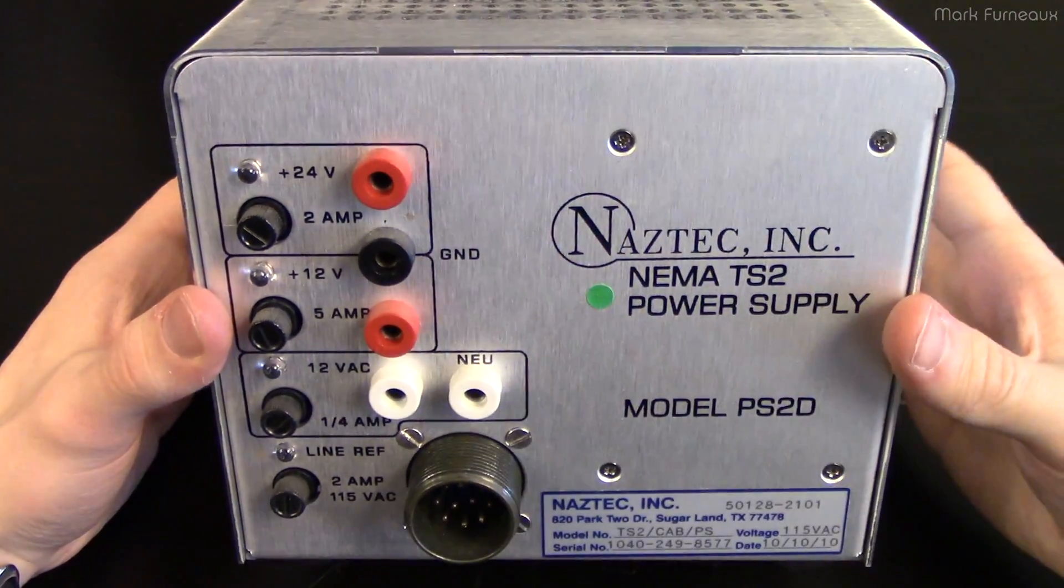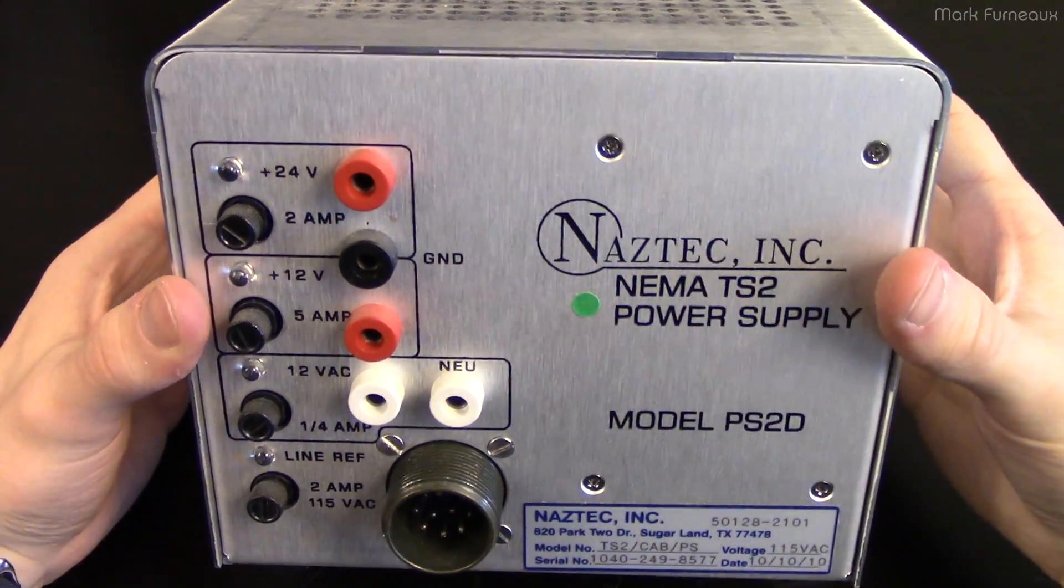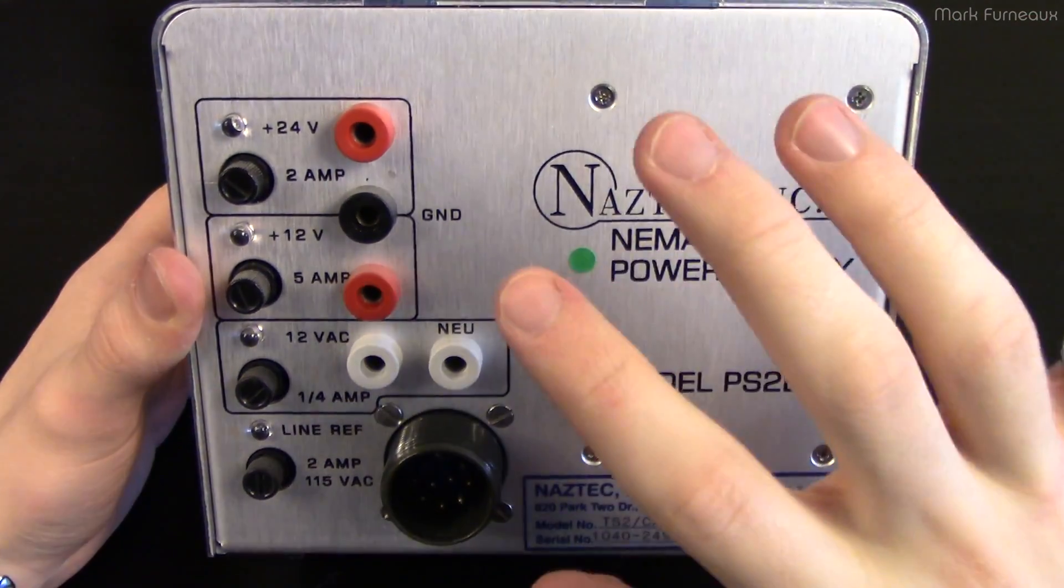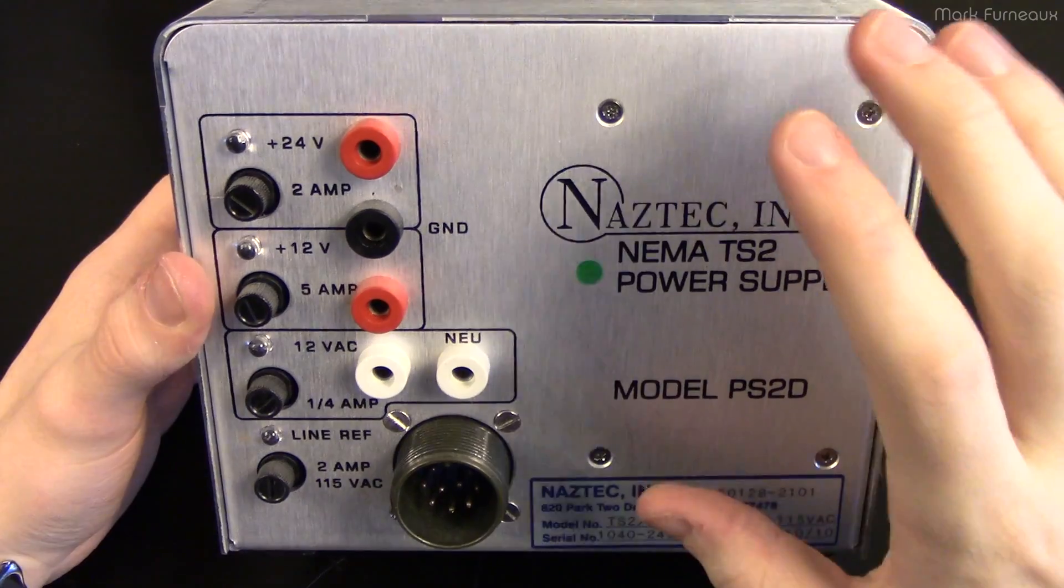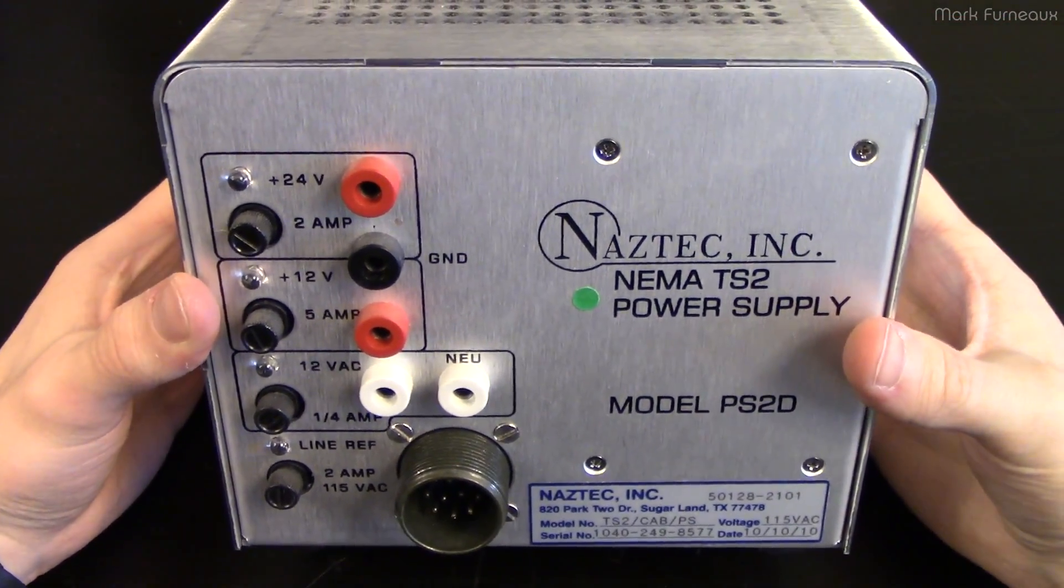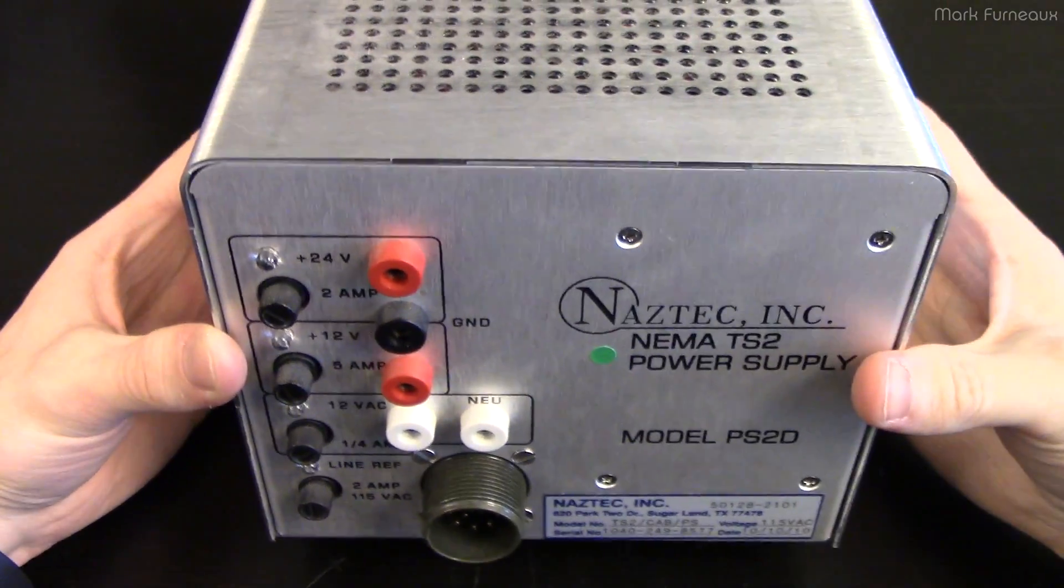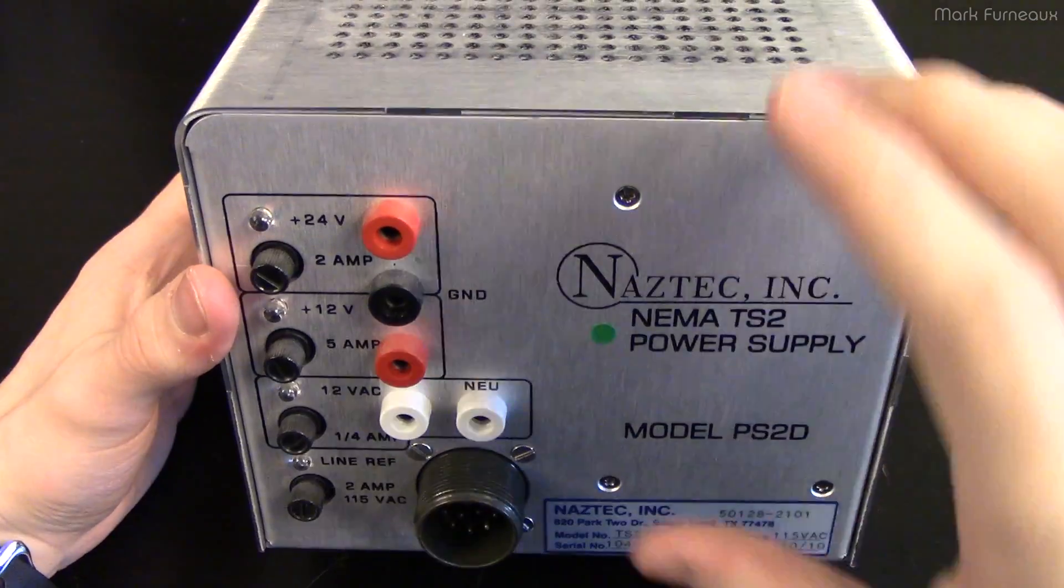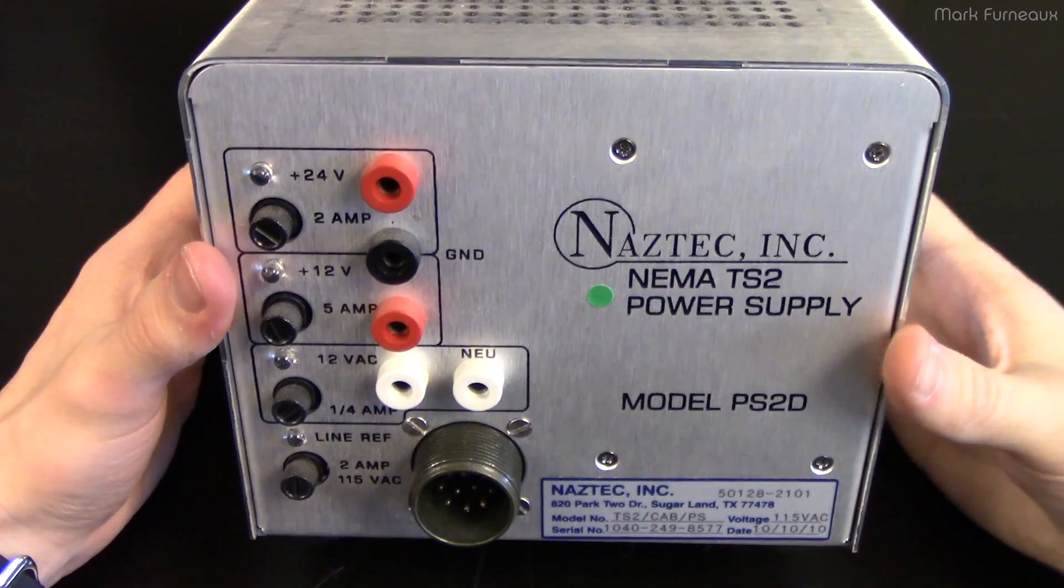What makes this power supply interesting, because I know there's going to be people that go, oh, it's just a power supply. What makes this interesting, at least to me, is that this is actually from a traffic light control system. So NAZTEC, they make basically the systems which control traffic lights at intersections, and so this power supply would connect to a backplane with a bunch of controller cards that would go in that cabinet that sits off to the side of the intersection and actually controls the signaling lights.